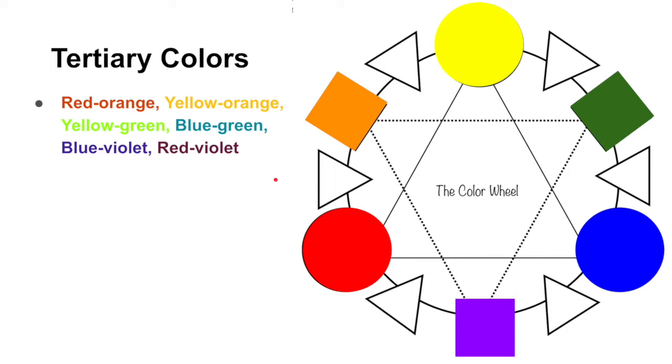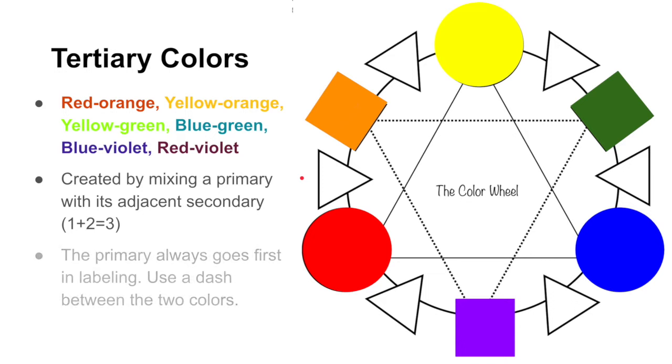Well, it's math. One plus two equals what? Three. So we need to mix a primary with its adjacent or next to secondary. So the secondary right next to the primary, we'll mix them together to create our tertiary color. And when we name them, the primary always goes first because primary is number one. So primary first, then the secondary, and we use a dash in between the two names, just like we have up here.